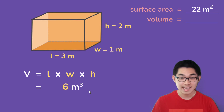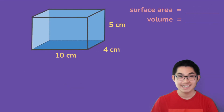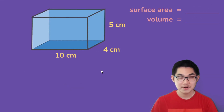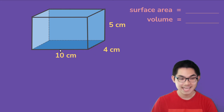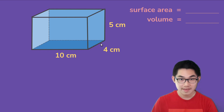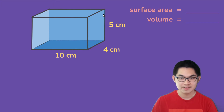The volume is 3 times 1 times 2, which is 6 meters to the power of three. So the volume of this rectangular prism is 6 meters cubed. Let's try another example — here we have another rectangular prism. This time the length is 10 centimeters, the width is 4 centimeters, and the height is 5 centimeters.